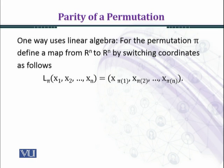One way uses linear algebra. For the permutation π, define a map from R^n to R^n by switching coordinates as follows: L_π(x1, x2, ..., xn) is defined as (x_π(1), x_π(2), ..., x_π(n)).